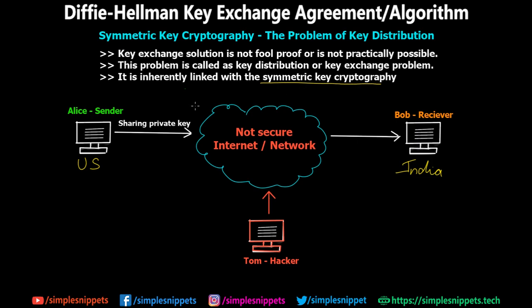In symmetric key cryptography, only one single key is used for both encryption and decryption. So if they share this private key over an insecure network, a hacker like Tom — an intruder — can read that private key and then decrypt all messages being passed between the sender and receiver. So there has to be some mechanism to solve this.